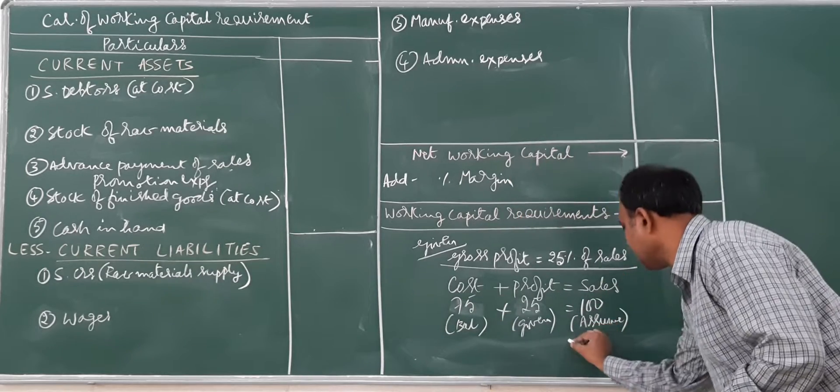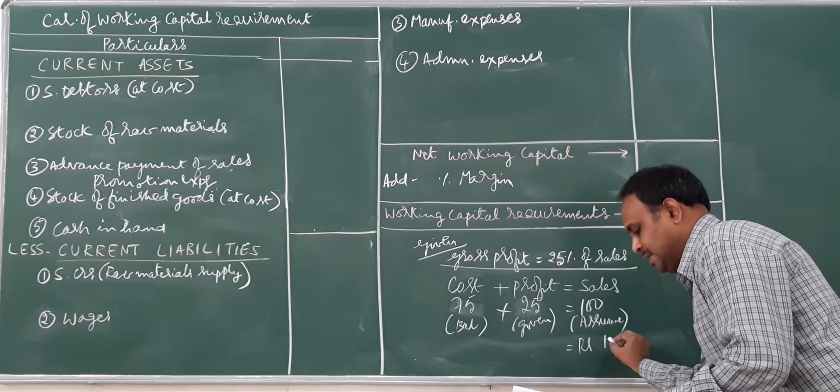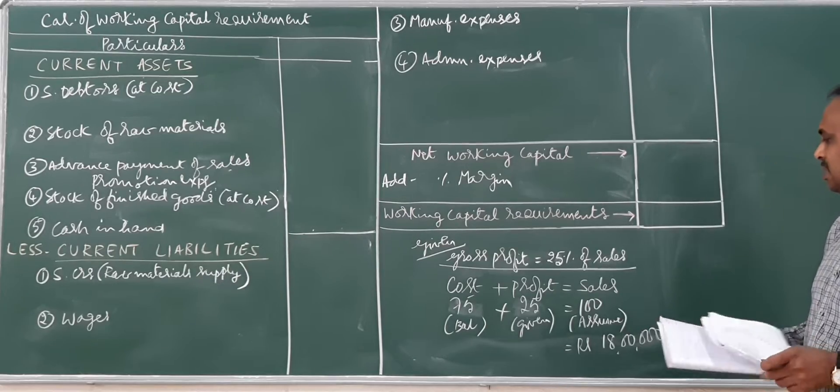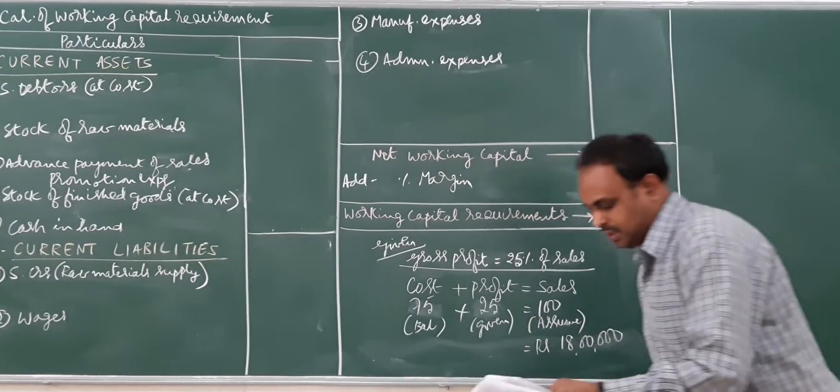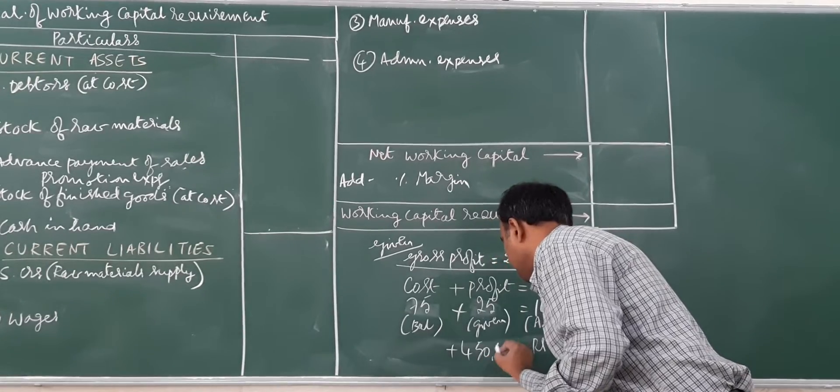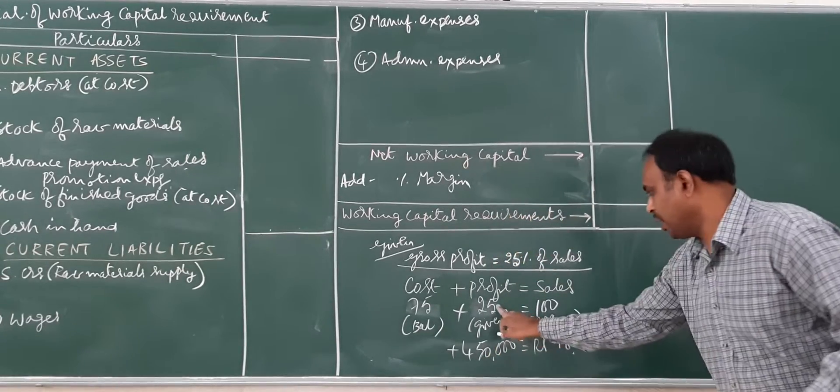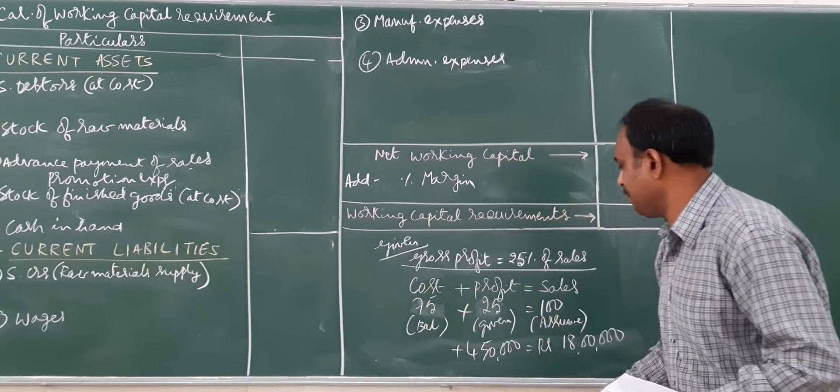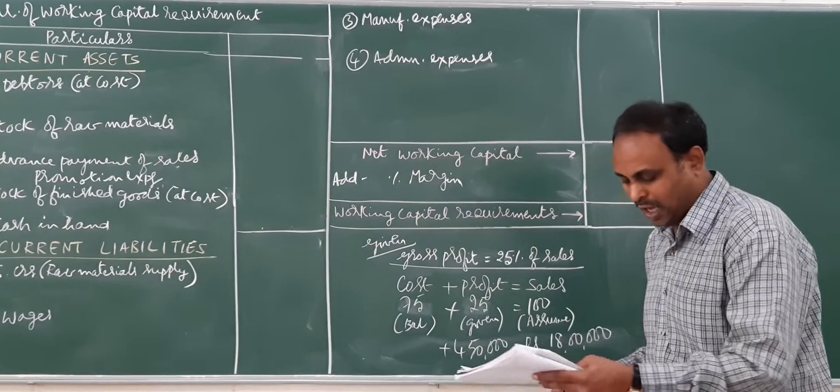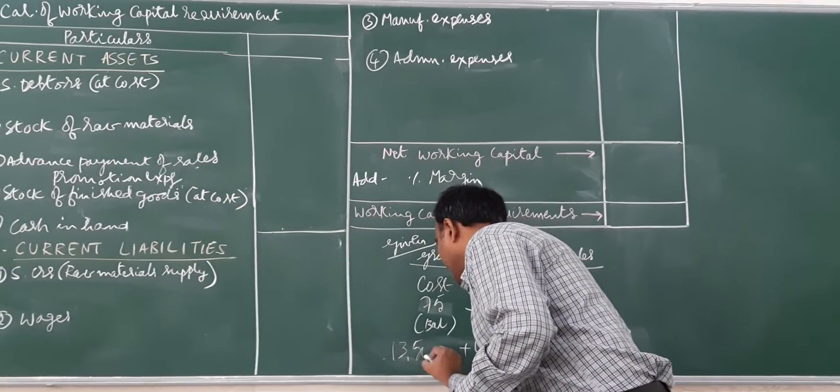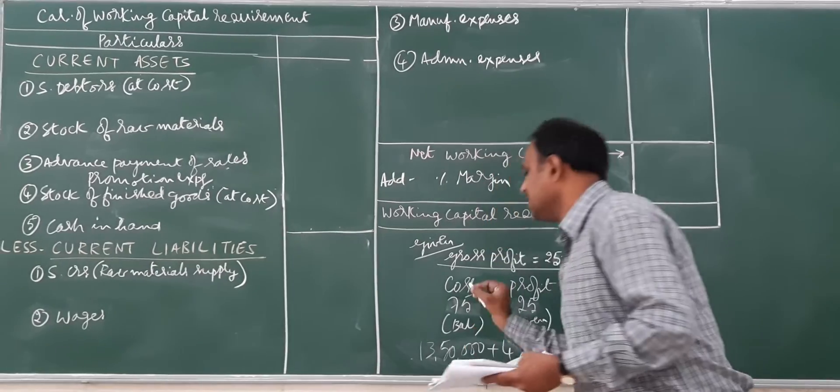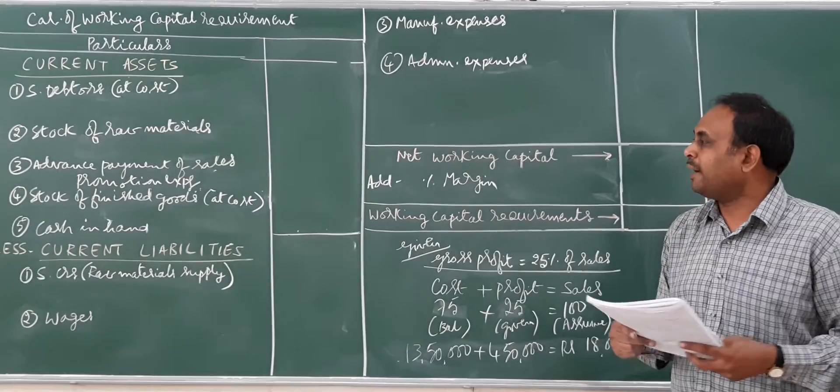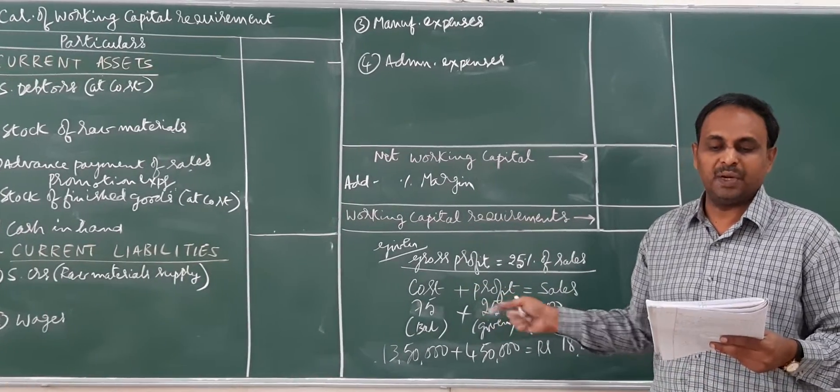The sales amount is 18 lakhs. So 25% of 18 lakhs is 4 lakh 50,000. The balance is 75%, or 18 lakhs minus 4 lakh 50,000, which becomes 13 lakh 50,000. This calculation is required for the data, so do this in the beginning.